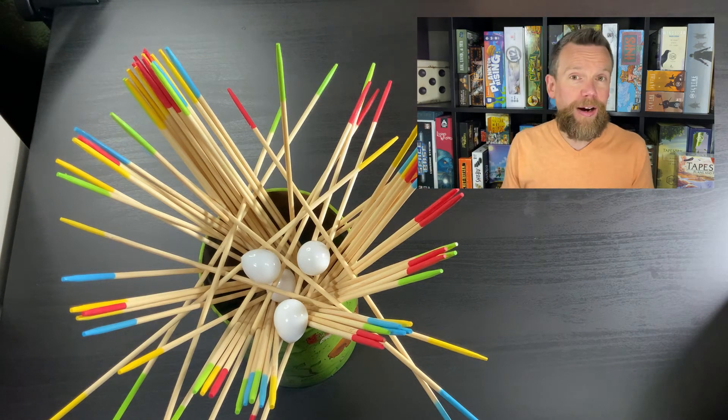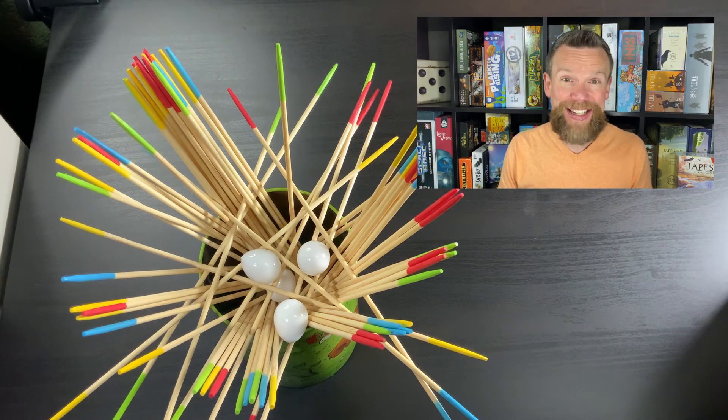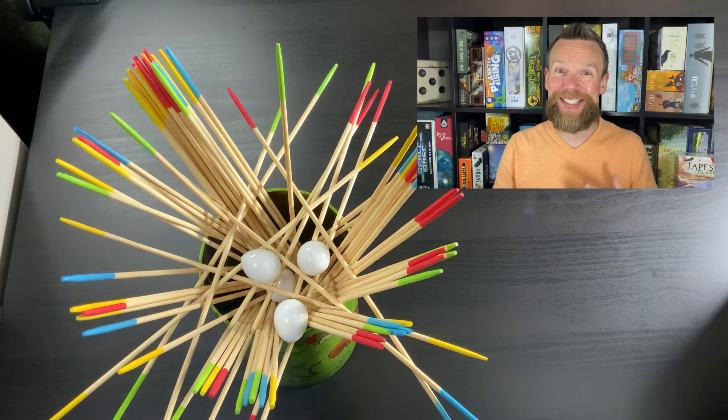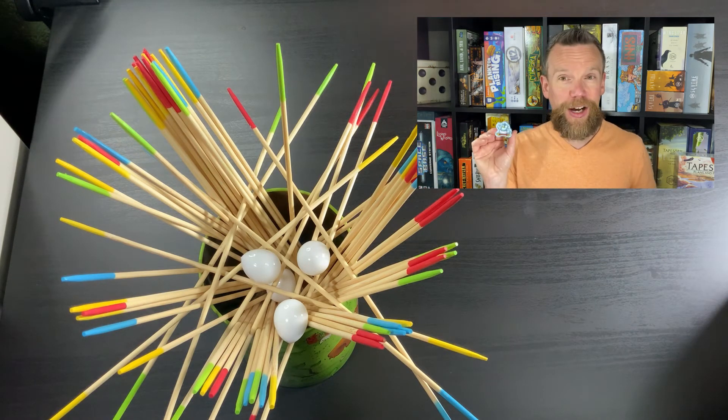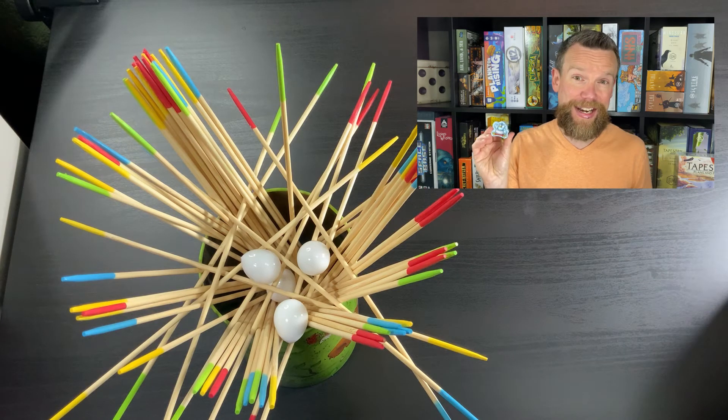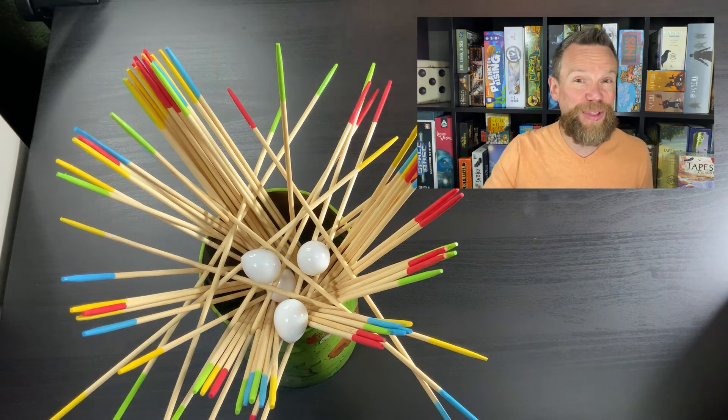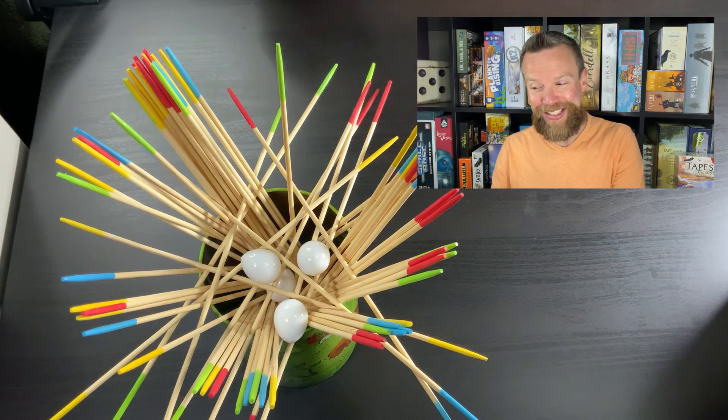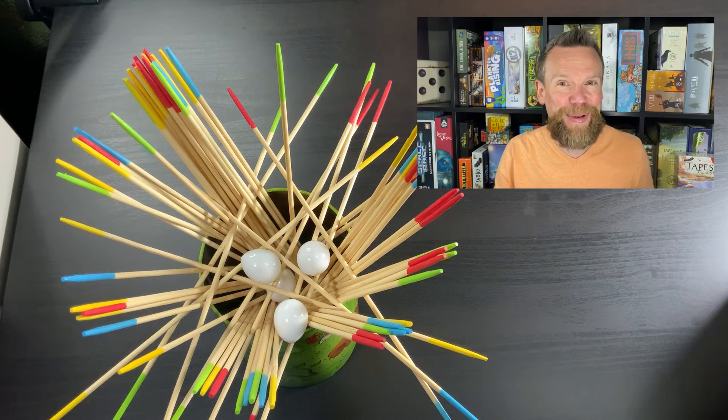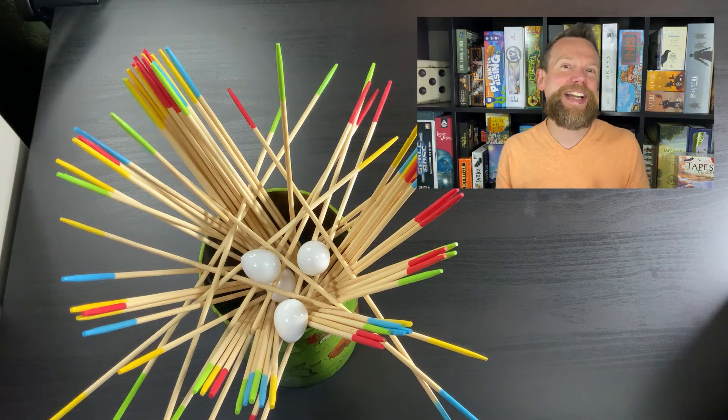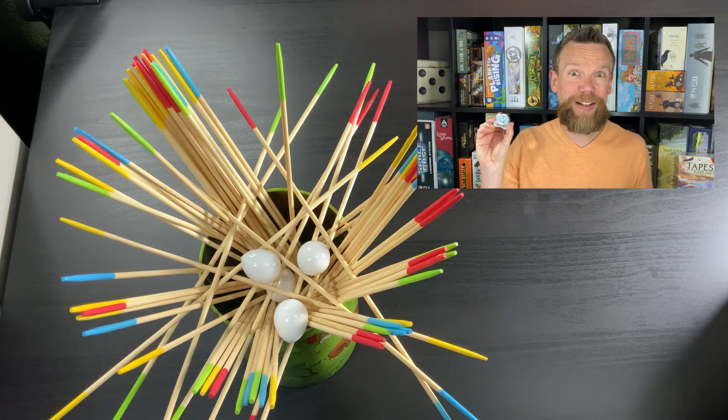Once a player has run out of eggs to place, that's where the end game starts to get closer, because after that, you've got to balance the cuckoo on that nest somehow. This is a big wooden bird that has to balance without knocking eggs off, without knocking the sticks off, he's got to balance somehow on this nest, and that's how a player can win the game, is by balancing the cuckoo at the end.